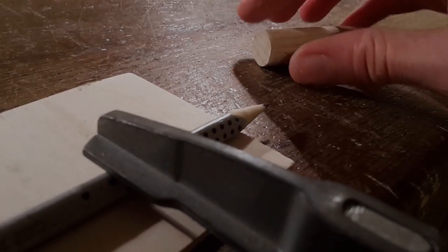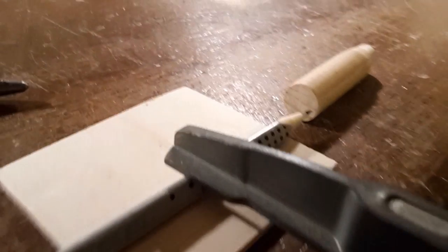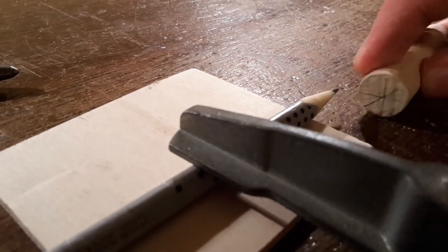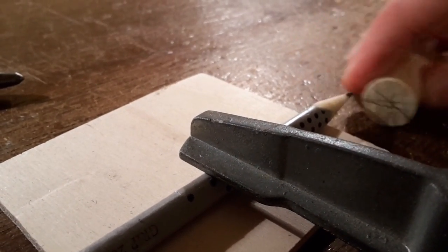All right, so here's a close-up of this process. I just clamped the pencil down with a clamp, and then just run your wooden dowel over the tip of the pencil.